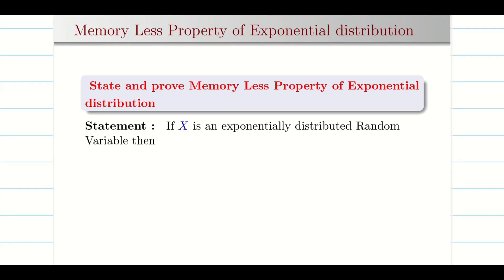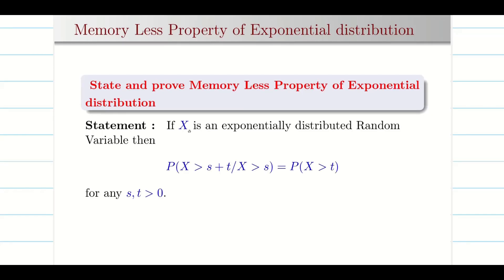If x is an exponentially distributed random variable, then the probability of x greater than s plus t, given x is already greater than s, is equal to the probability of x greater than t, provided both s and t are greater than 0. What this is trying to say is: if a random variable or stochastic process possesses the memoryless property, its future behaviour does not depend on the past behaviour given its current state. In other words, knowing the history of the process provides no additional information about future behaviour beyond the current state.